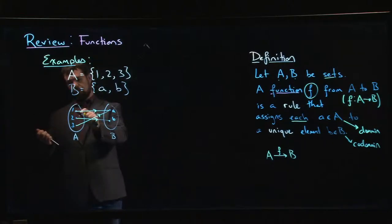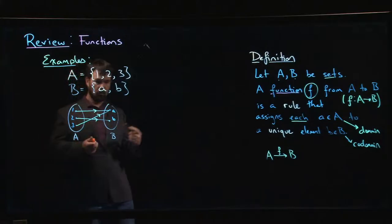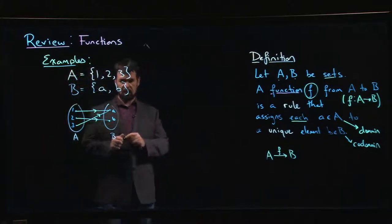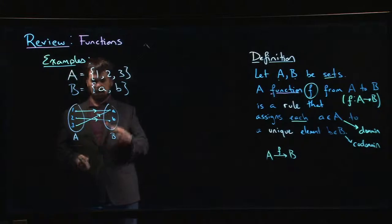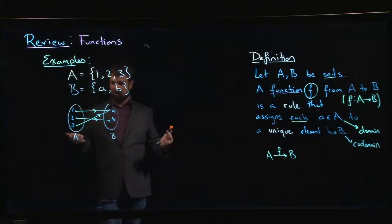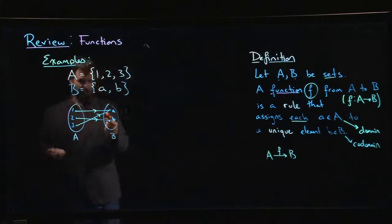For any element in the domain, you can only have one outgoing arrow, but in the codomain you can have more than one incoming arrow. It's okay that I have two arrows going into A. It would only be a problem if I had two arrows coming out from one of these elements. This defines a function.